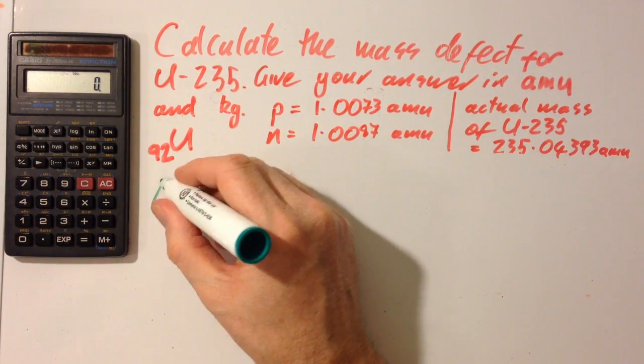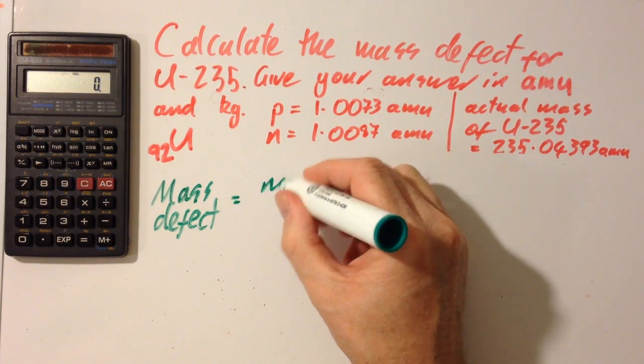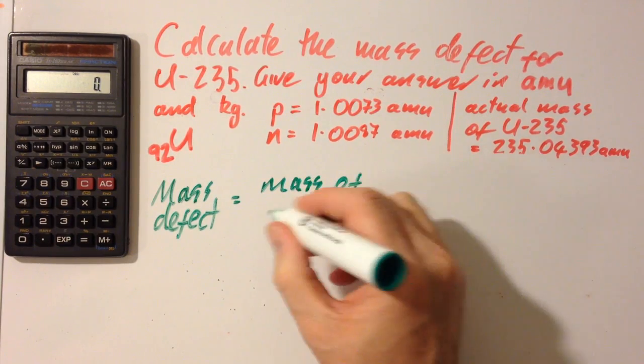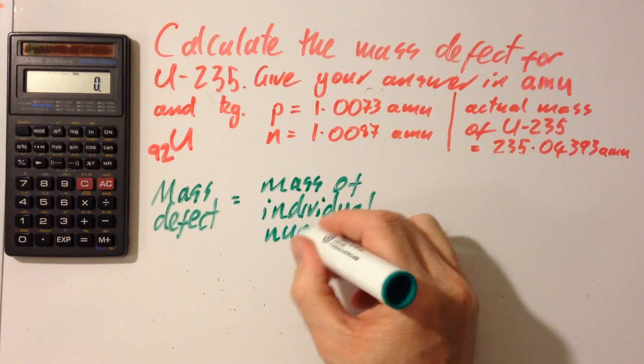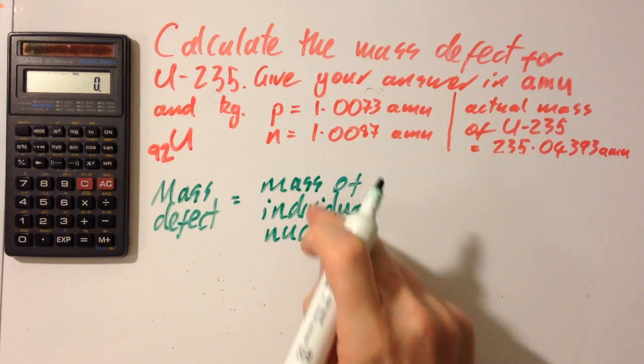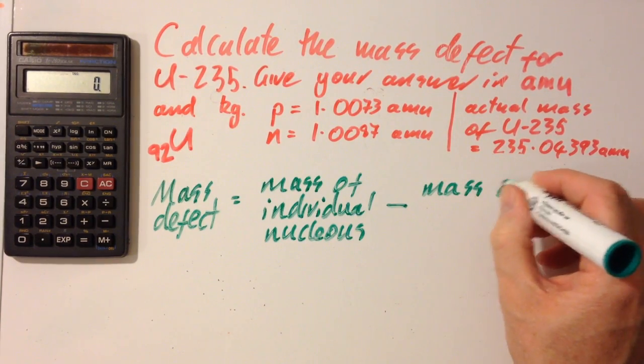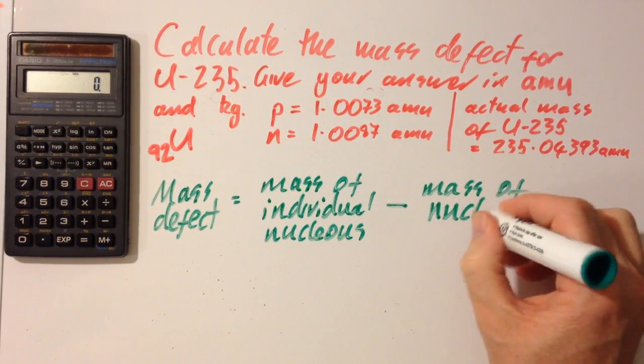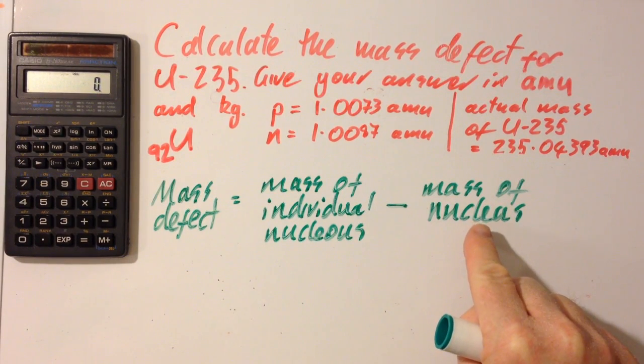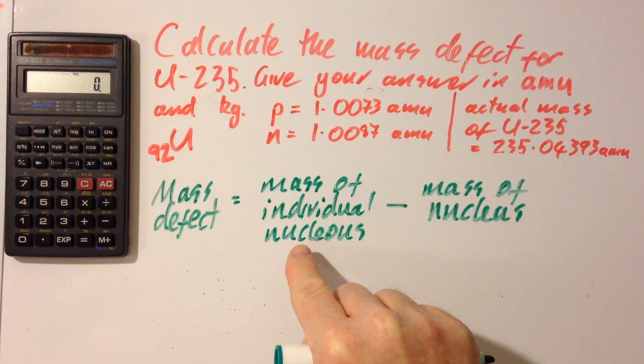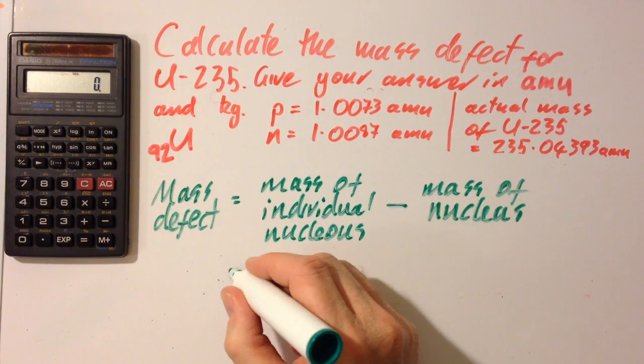Alrighty, so the mass defect is the mass of the individual nucleons, that's protons and neutrons, minus the mass of the nucleus. This should be lighter, since when the nucleons come together to make the nucleus, energy is released. So what's the mass of the individual nucleons?